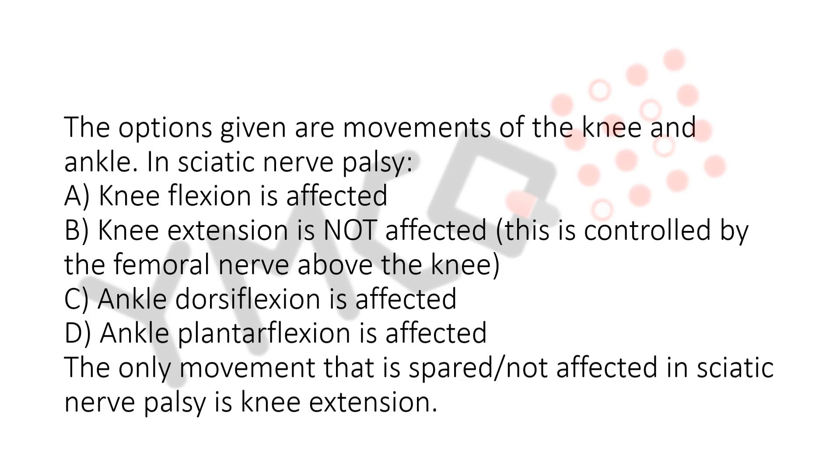In sciatic nerve palsy: A. Knee flexion is affected. B. Knee extension is not affected — this is controlled by the femoral nerve above the knee. C. Ankle dorsiflexion is affected. D. Ankle plantar flexion is affected. The only movement that is spared, not affected in sciatic nerve palsy, is knee extension.